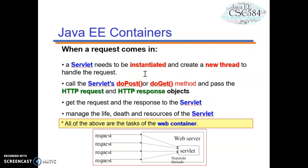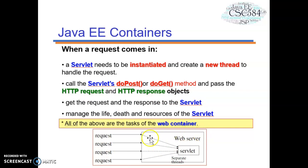For example, when a request comes in and you develop a servlet, the servlet needs to be instantiated and a new thread is created to handle the request. The web server calls the service request — whether it is a POST or GET method — and passes the HTTP request and HTTP response objects. The web server handles the HTTP request and response, gets them to the servlet, and manages the lifecycle of resources of that particular servlet. We will learn more about servlets in detail in another chapter.